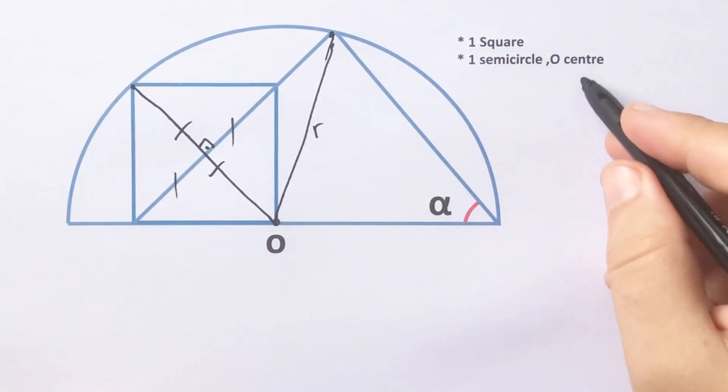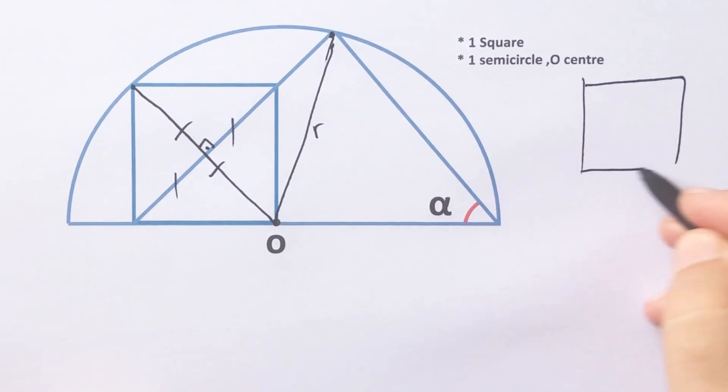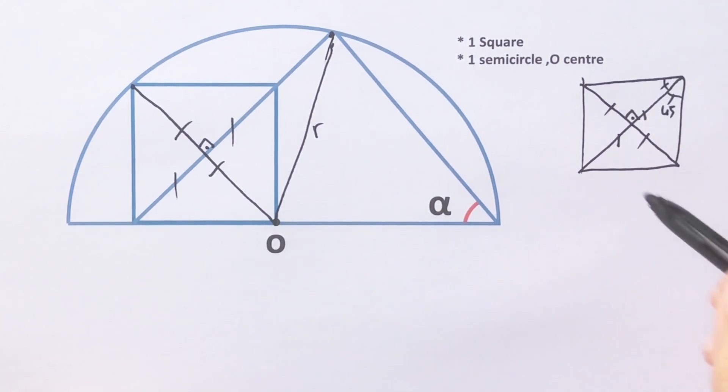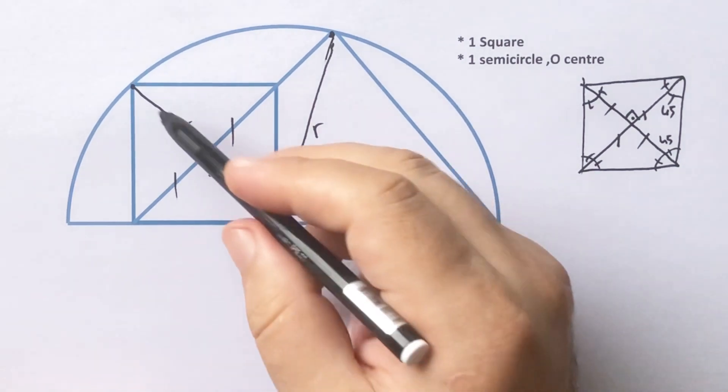Let's remind you, if we have a square, let's draw the diagonal of this square. We know that here must be 90 degrees and these four parts must be equal, and we know that the diagonals of the square are bisector lines, okay?